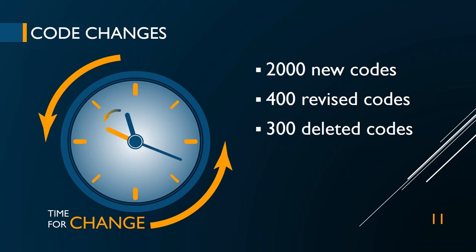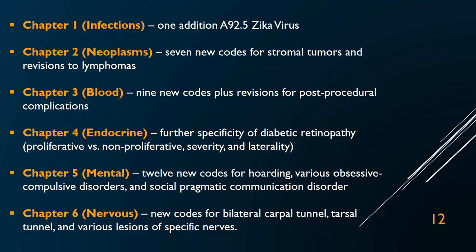I like ICD-10. I think the code set is logical and useful, and I think it can actually help you become better documenters. There are 21 chapters of codes in ICD-10, each covering a different body system or condition. I'm going to take you through each chapter and summarize what changed. Chapter 1 is infectious diseases — codes starting with A. There's one new code for the Zika virus, but other than that no changes. The neoplasm chapter only had seven new codes and a few revisions. If you work in oncology, you should find out what those seven new codes are.